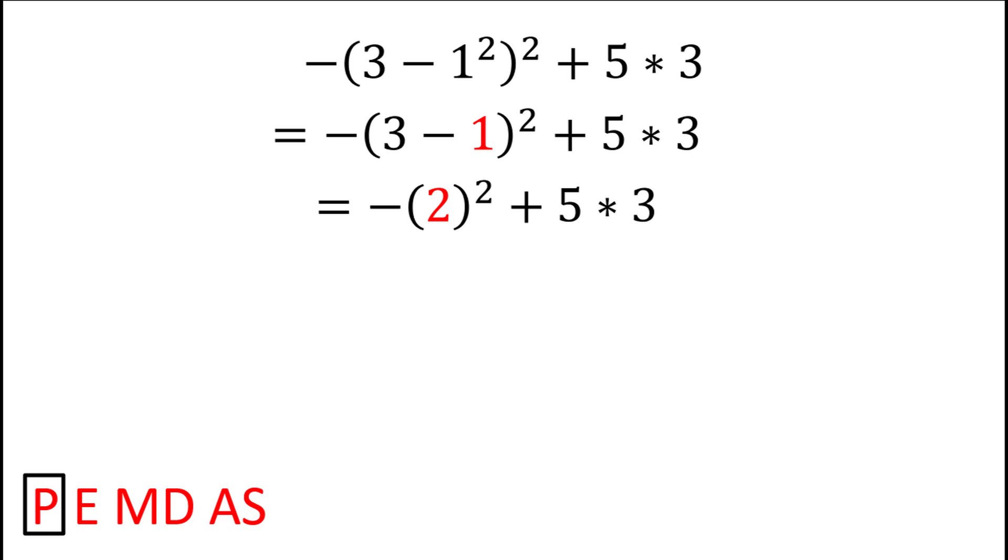Now that we have dealt with the operations inside parentheses, we can work on the exponents, which means we should take 2 and square it to give us 4, which becomes negative 4 since there was a negative sign before the parentheses.